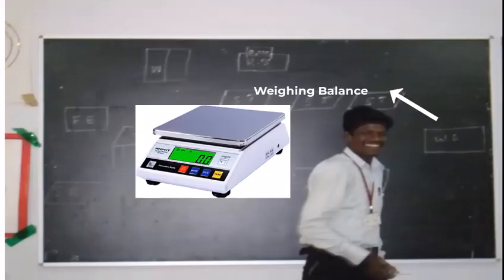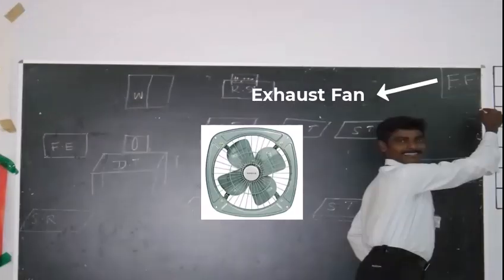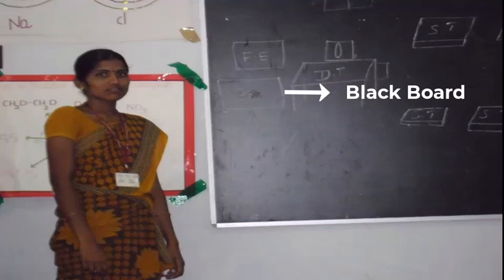Another student teacher came and wrote WB which means weighing balance. Next student wrote EF which means exhaust fan. Next student teacher came and wrote BB which means blackboard for writing purpose or for teaching before the practicals.